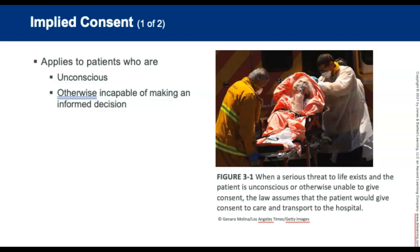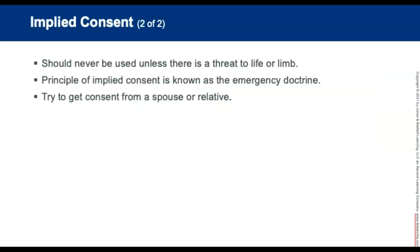Next, let's talk about implied consent. Implied consent applies to patients who are unconscious or otherwise incapable of making rational, informed decisions about care. When a serious threat to life exists and the patient is unconscious or otherwise unable to give consent, the law assumes that the patient would give consent to care and transport to the hospital — this is implied consent. Implied consent should only be used when a serious medical condition exists and there is a threat to life or limb. The principle of implied consent is known as the emergency doctrine. It is a good idea to try to get consent from a spouse or relative before treating a patient based on implied consent.